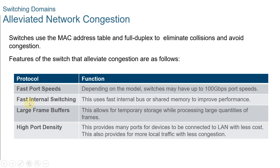The next characteristic is fast internal switching, which uses fast internal bus or shared memory to improve performance. Switches use fast internal bus or shared memory to provide high performance. For large frame buffers, this allows for temporary storage while processing large quantities of frames. Switches use large memory buffers to temporarily store more received frames before dropping them. This enables ingress traffic from a faster port, for example 1 Gbps, to be forwarded to a slower 100 Mbps egress port without losing frames.